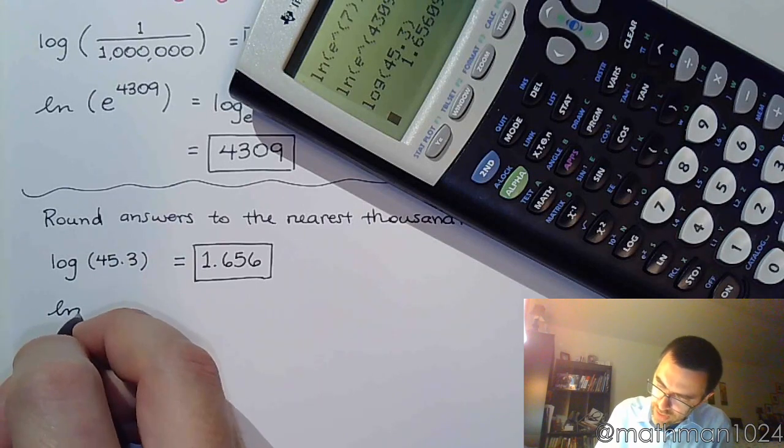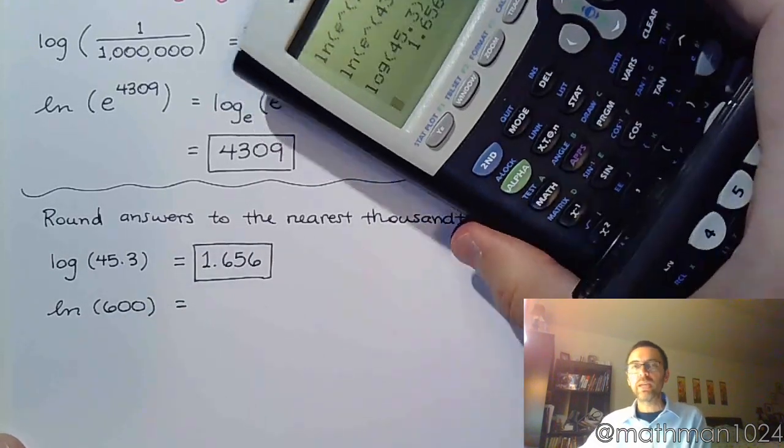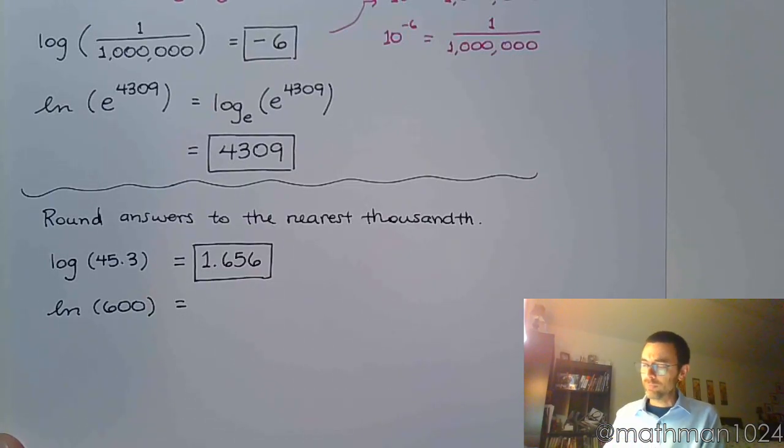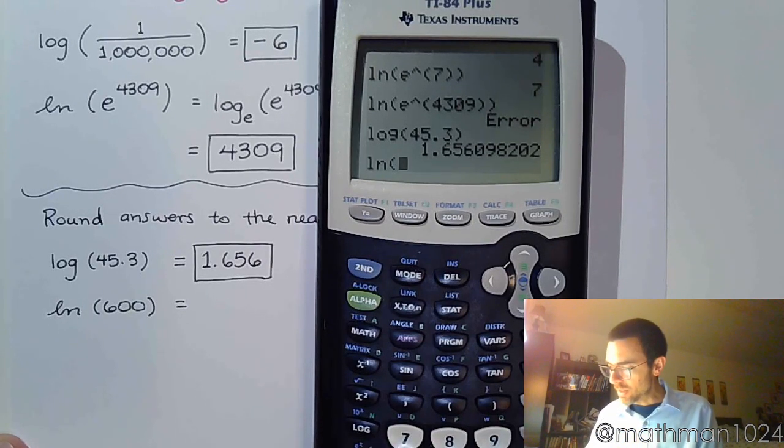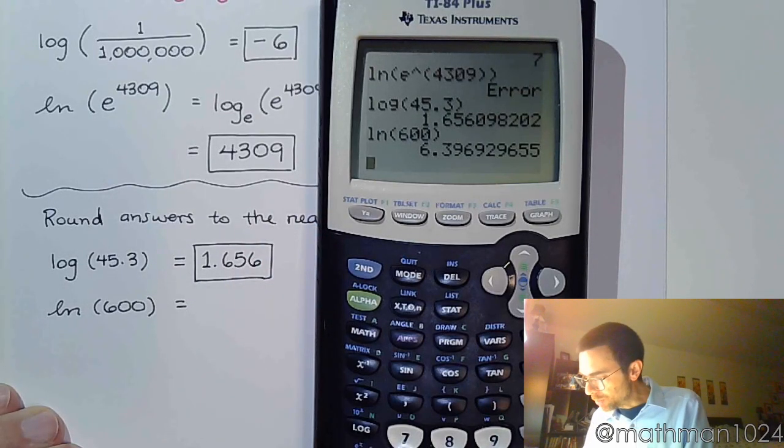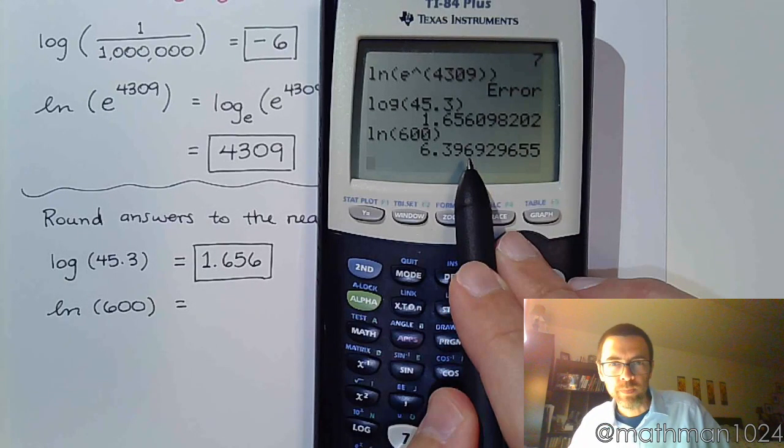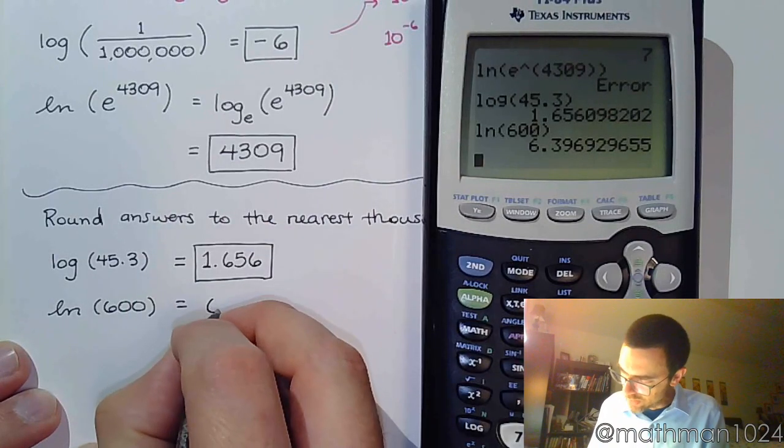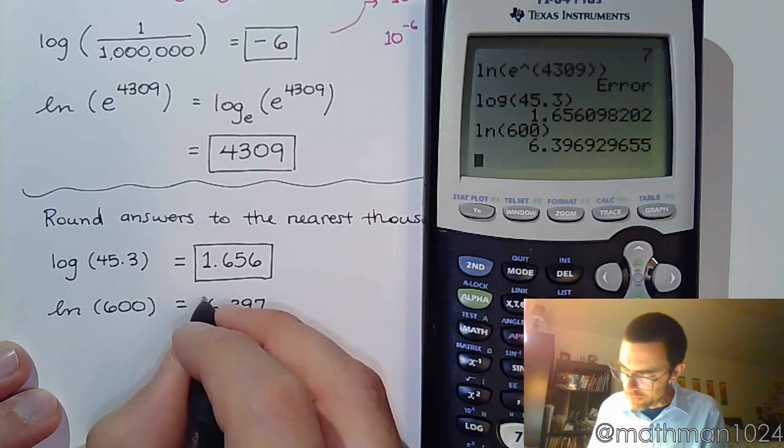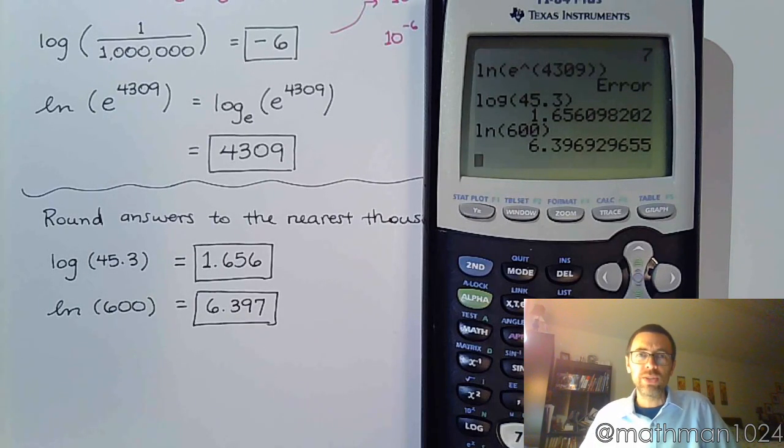Now the next example we have is the natural log of 600. And again, you're just going to type it into the calculator. I've got to make sure I type the right button, though. So it's the natural log of 600. So ln 600. And I come up with - so round to the nearest thousandth. That's where the six is. Just to the left of it is the nine, so I've got to bump it up one. So that's 6.397. And we could do stuff like this all day long. Just put random numbers in there, and some of the homeworks that you have will ask you to do that.